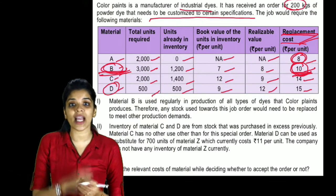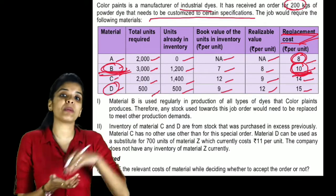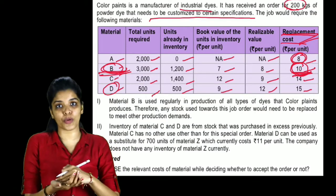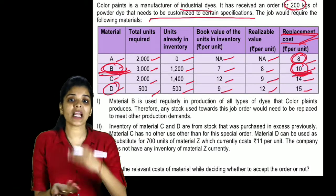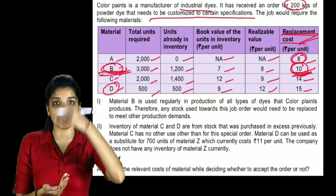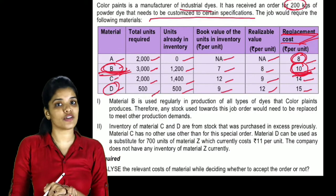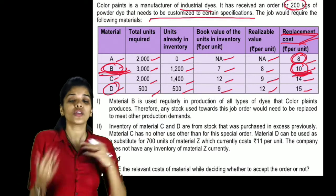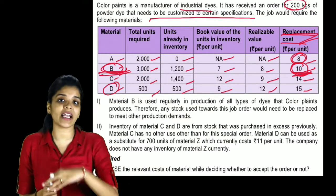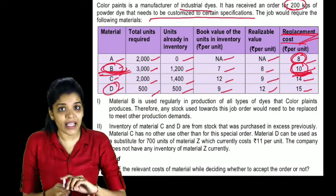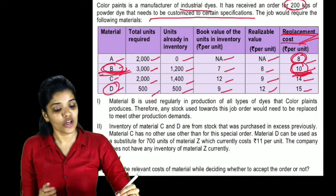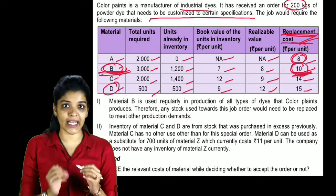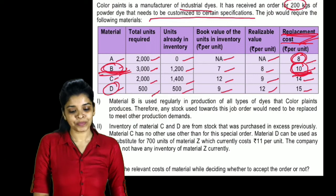Replacement cost means the cost at which we can replace the product today — that is, the price at which we can buy it from the market today. So the relevant cost for B is replacement cost, Rs.10 per unit.